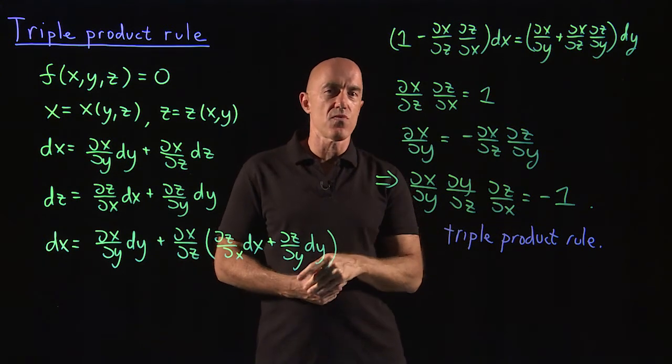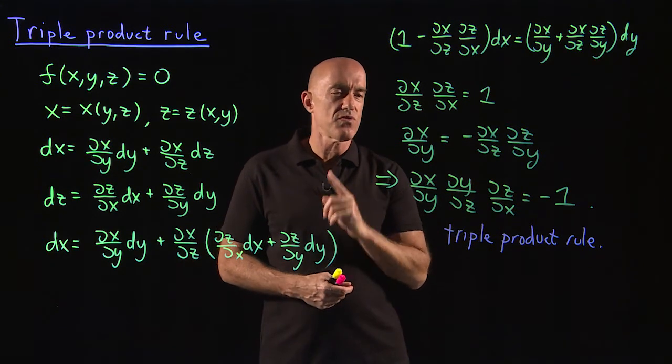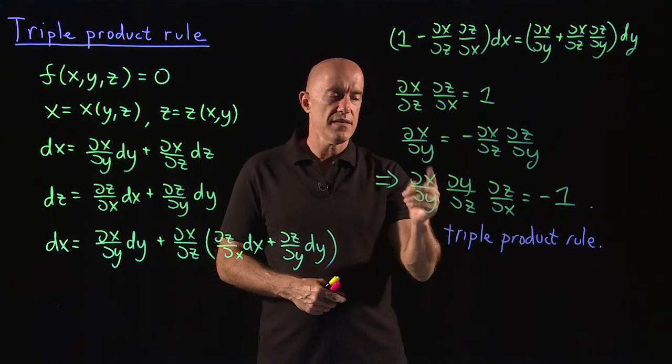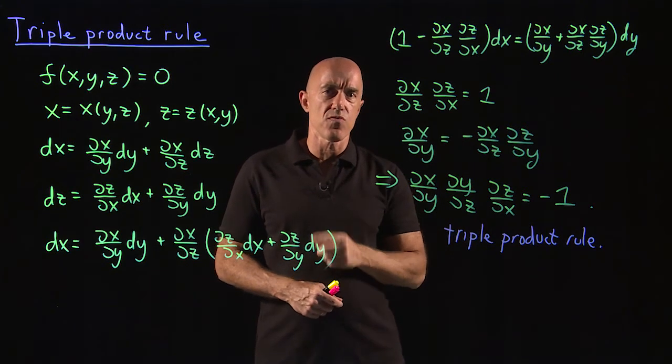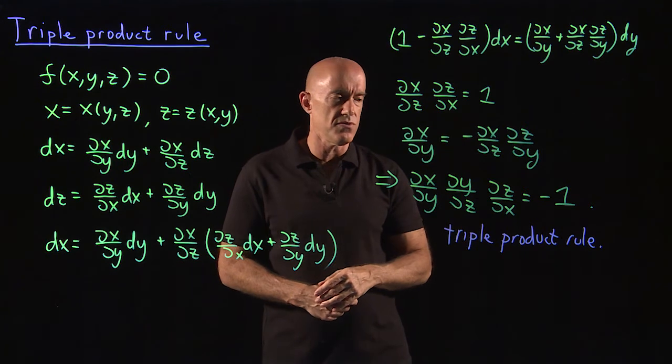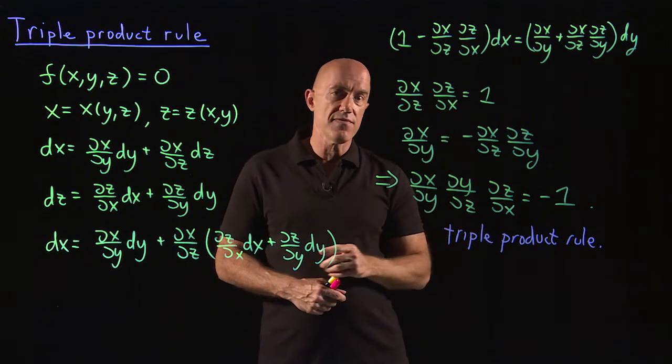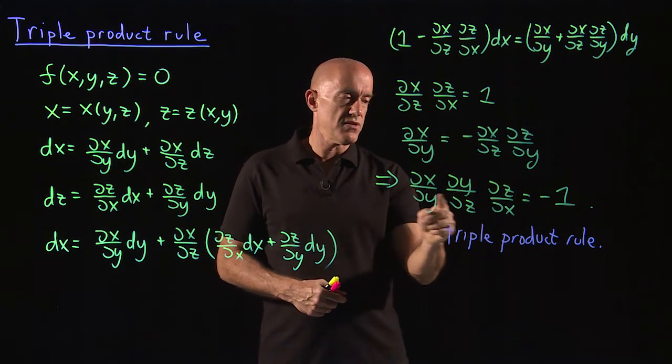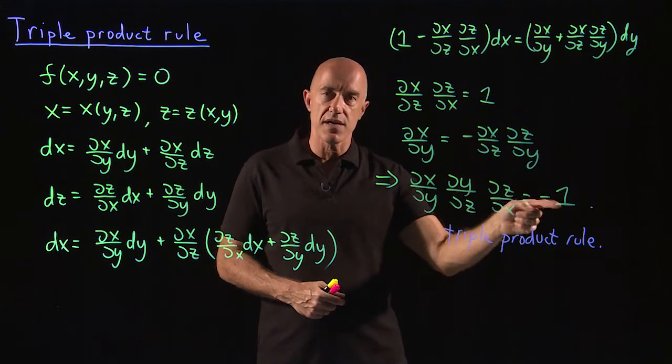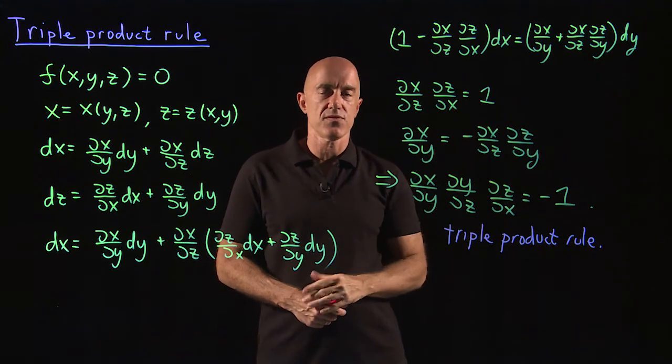But partial derivatives don't work that way. Partial derivatives are not delta x divided by delta y, like a single variable derivative. They behave differently. So this triple product rule, you don't get plus one, you get minus one.